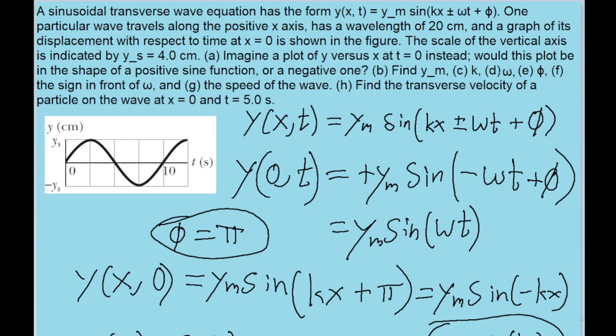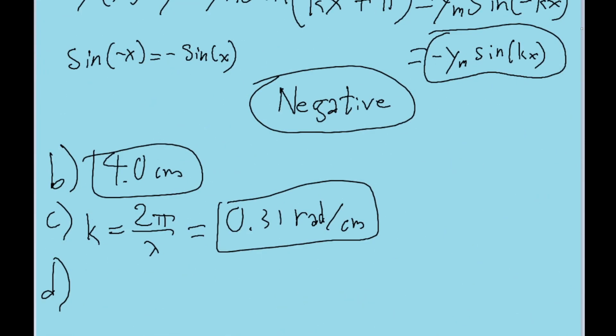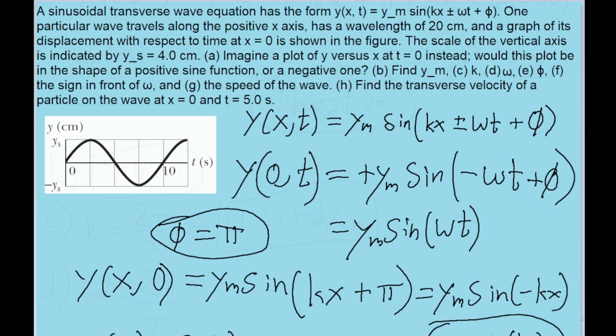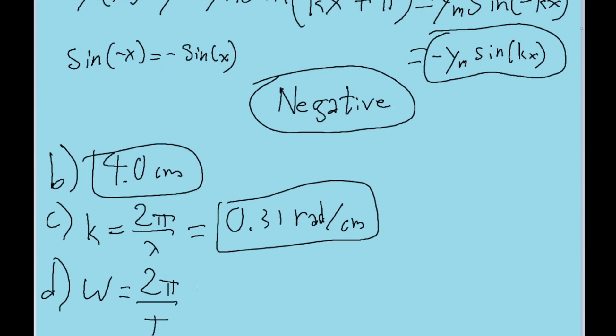Part d asks us to find omega, which is the angular frequency. But again, we've got a formula for this. The angular frequency, omega, is equal to 2π divided by T, the period of the wave. Or in other words, how long it takes for the wave to go through one cycle, which we can see from this graph is 10 seconds. So 2π divided by 10 seconds is equal to about 0.63 radians per second. And that is the angular frequency.